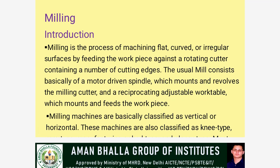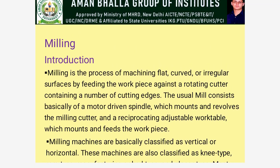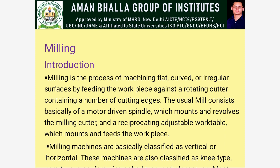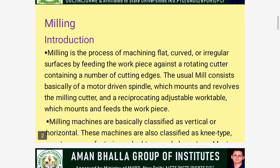The usual mill consists basically of a motor-driven spindle which mounts and revolves the milling cutter, and a reciprocating adjustable work table which mounts and feeds the workpiece. These are basically classified as vertical or horizontal.